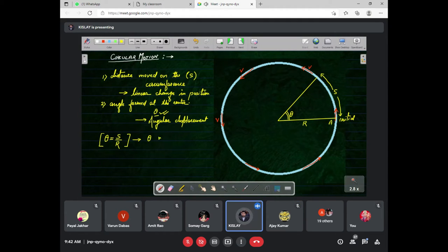Linear distance covered is s and angular displacement is theta. Now see that there is a relation: theta is equal to s upon r. Do you know? Good. Is there any condition for this formula or is it valid everywhere? Theta must be in radians, otherwise this formula is not valid.